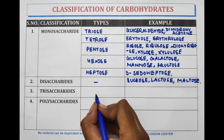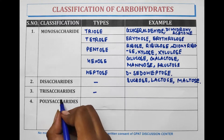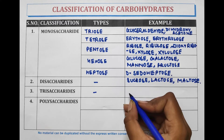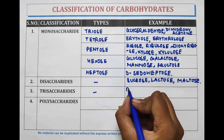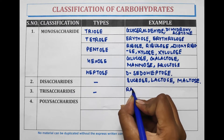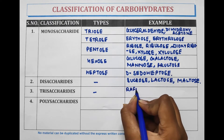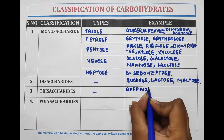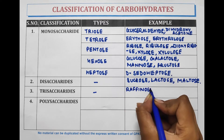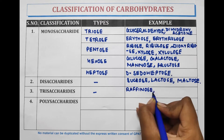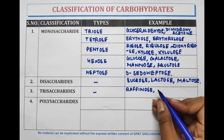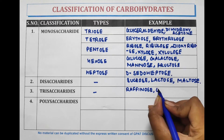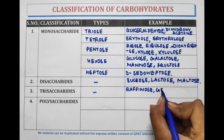Trisaccharide has no subtype, and examples of trisaccharide are raffinose and gentianose.